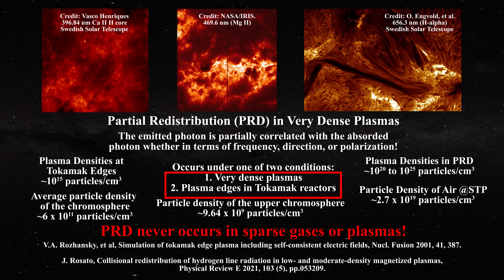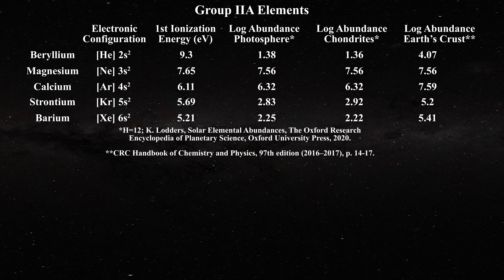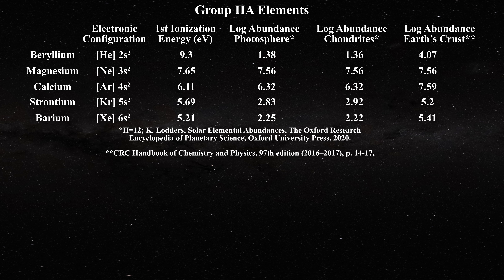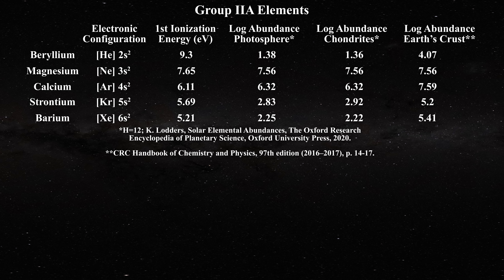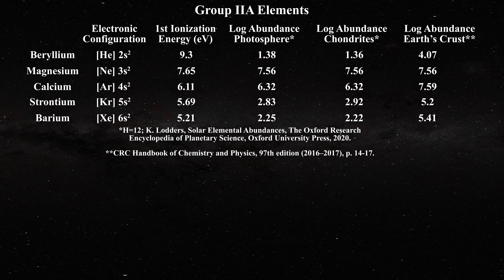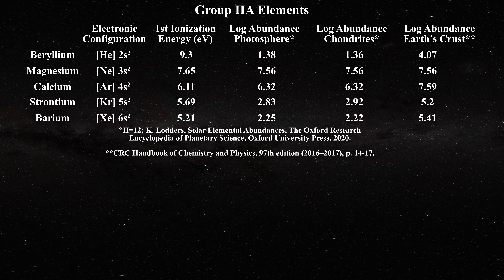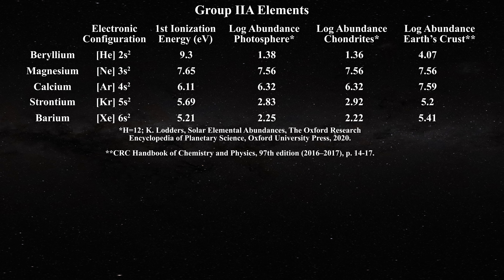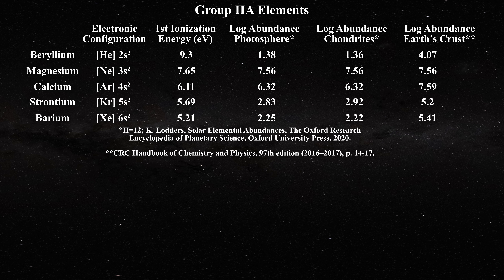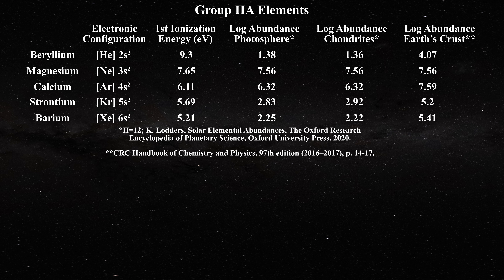With this groundwork, it is time to turn our attention to the group 2A elements, namely beryllium, magnesium, calcium, strontium, and barium. Let us note the electron configuration, first ionization potential, and relative photospheric abundances for each. Beryllium has the highest first ionization potential at 9.3 electron volts, but the first ionization potential for magnesium at 7.65 electron volts is well above that typically observed for other chromospheric lines. Magnesium has the highest accepted relative abundance of the group 2A elements, being more than 17 times more common than calcium.